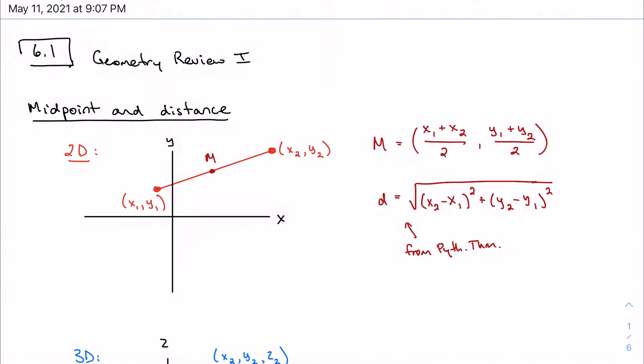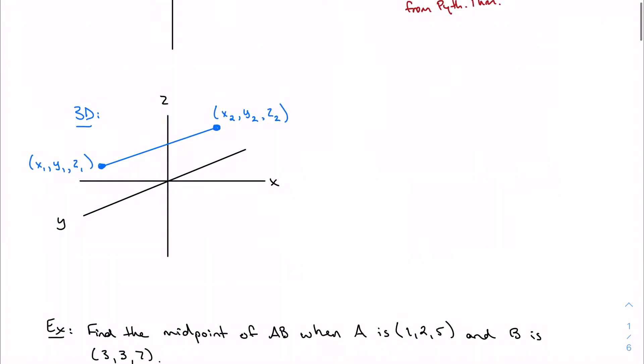Well, IB likes to take this and extend it into three dimensions. When we extend it into three dimensions, we're doing just very much the same type of thing. It follows pretty logically that in three dimensions, now I just have an extra z component that I need to account for. So I have x1 plus x2 over 2, y1 plus y2 over 2, and z1 plus z2 over 2.